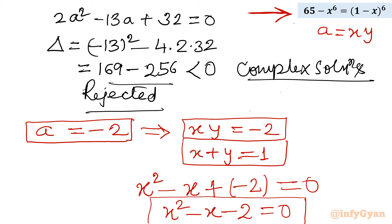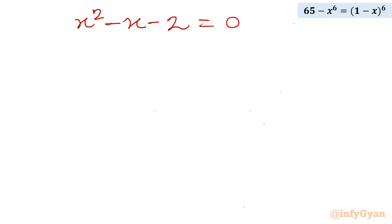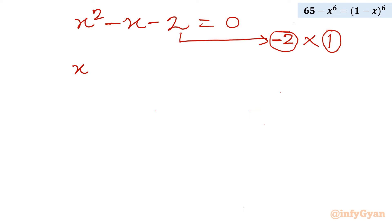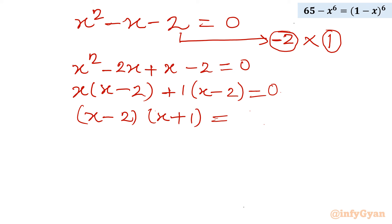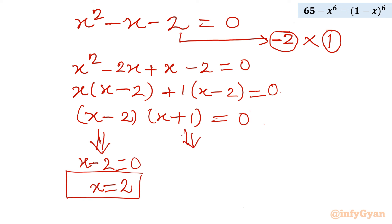Let us solve x² minus x minus 2 equal to 0 using factorization. The factors of 2 are 2 and 1; considering minus 2 and plus 1 matches the middle term. So I write x² minus 2x plus x minus 2 equal to 0, giving x(x minus 2) plus 1(x minus 2) equal to 0, which factors as (x minus 2)(x plus 1) equal to 0. Setting each factor to zero: x minus 2 equal to 0 gives x equal to 2, and x plus 1 equal to 0 gives x equal to negative 1.